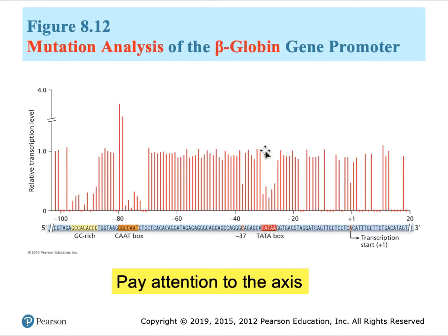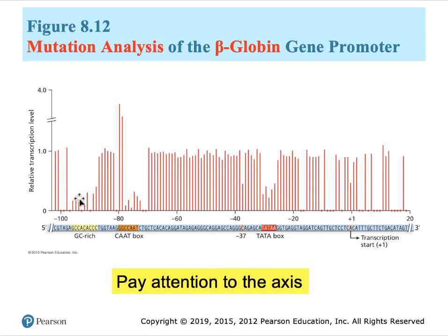Looking at the CAT box, the level of relative transcription — 100% — has been reduced to under 50% by individual mutations within the TATA sequence. Moving over to the CAT box, mutations for this particular gene reduced transcription even further down to almost nothing if the last couple of bases are altered. The same kind of analysis can be performed for the GC-rich box.